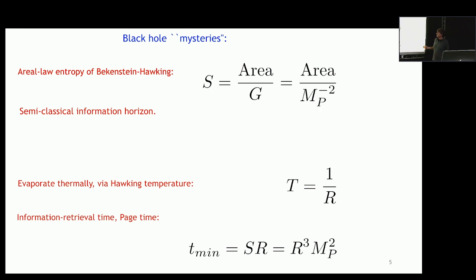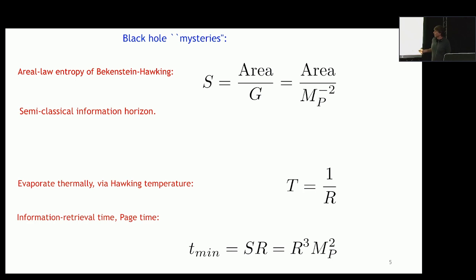The first mystery is that they have microstate entropy, which is the measure of the amount of quantum information that a black hole can carry. Black holes saturate the so-called Bekenstein bound on this information — its entropy scales like area in units of Newton's constant or the Planck scale.